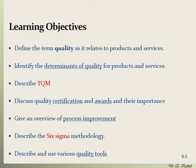The learning objectives for this chapter are as follows. By the end of this chapter, you will be able to define the term quality — what it means and how it relates to products and services. You will be able to identify the determinants and important factors of quality for products and services. You will know how to describe TQM, the total quality management, how it works and the process for that. You will learn how to discuss quality certification and awards for quality and their importance for organizations.